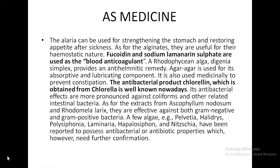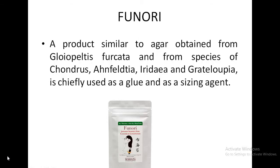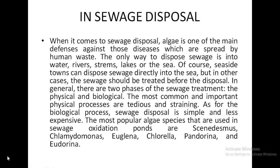We are aware of an antibacterial drug, chlorellin, which is obtained from Chlorella, a unicellular green alga. Fucoidan and sodium laminarin sulfate are used as blood anticoagulant drugs. A product called funori, similar to agar, is obtained from Gloiopeltis and Iridaea, and is also useful in sewage disposal.